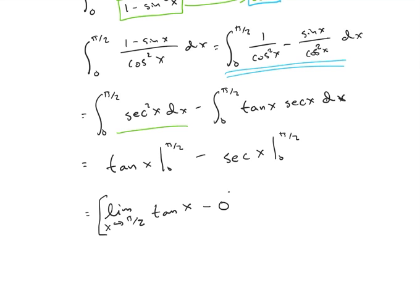And we're going to get minus the limit as x approaches pi over 2 of secant of x minus secant of 0. So 1 over cosine of 0 is just 1.